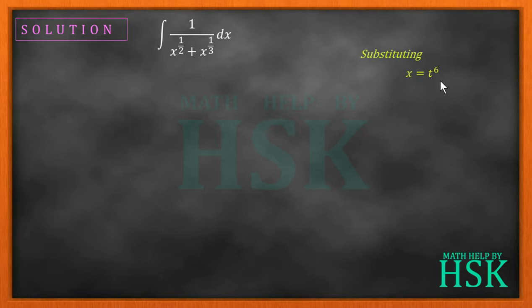Why this substitution is chosen: x to the power 1/2 is one term and x to the power 1/3 is the other term. If I take the LCM of 2 and 3, I get 6. So if I substitute x equals t to the power of 6...